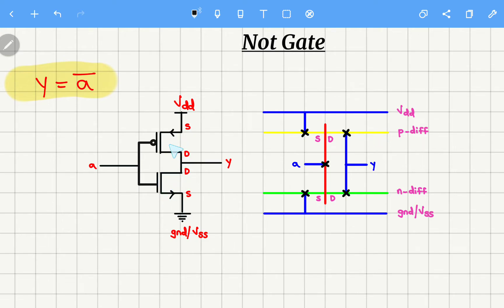Next, the pull down network. This is pull up network. Pull down network contains NMOS. The color coding which is used for it is green, and which is N diffusion.